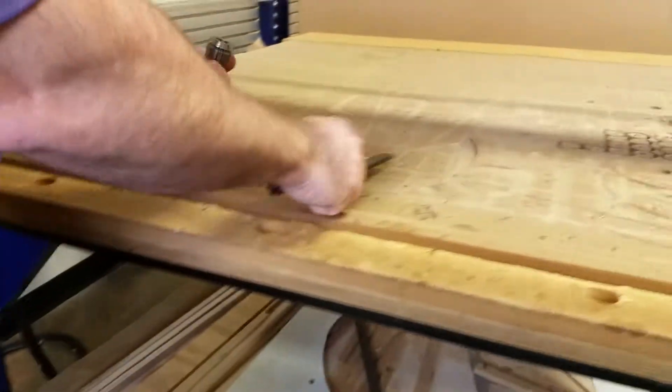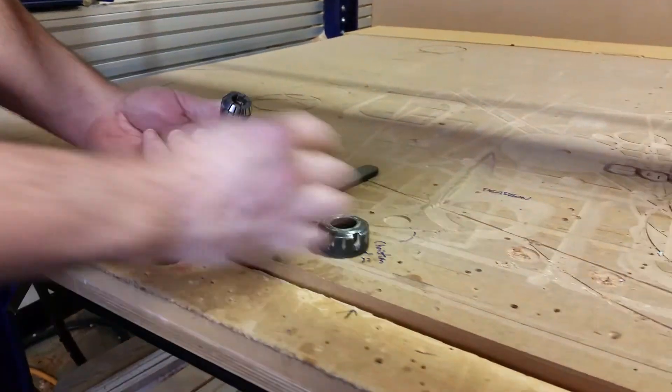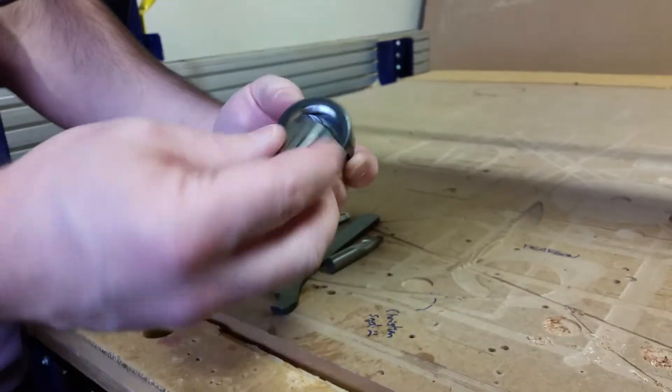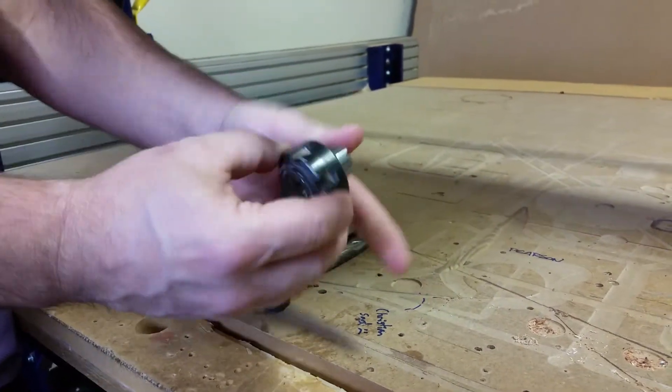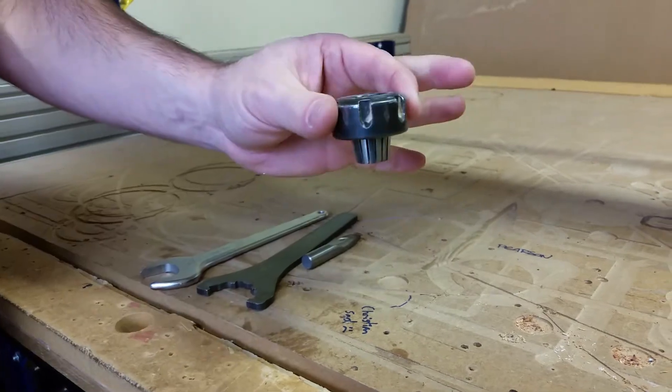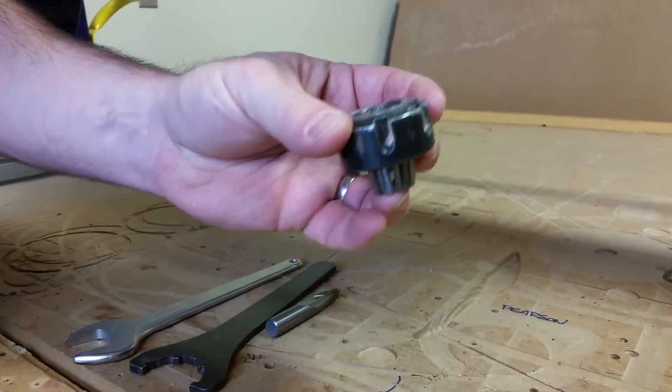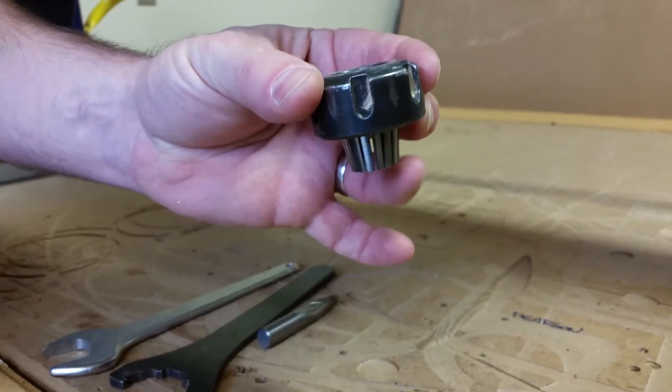We go over here. First thing we want to do is take our collet nut and our ER25 collet and make sure those snap in place. Should hold itself in. Never put the tool in or on the machine without it snapped in place.